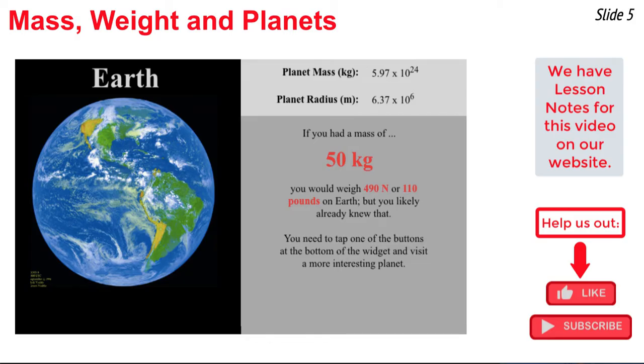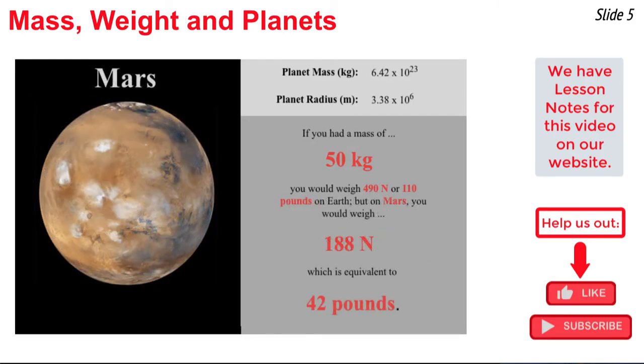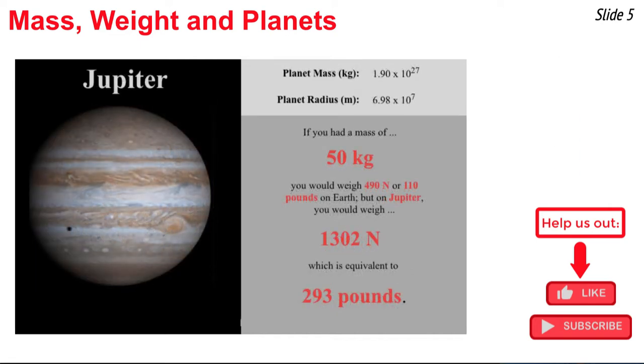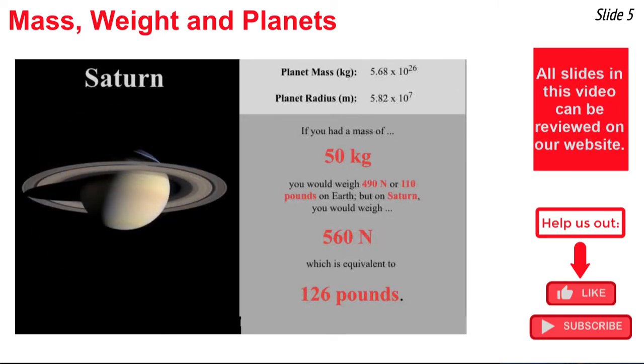This is a 110 pound person. Now, a 50 kilogram person on Mars would weigh 188 Newtons, on Jupiter, 1302 Newtons.